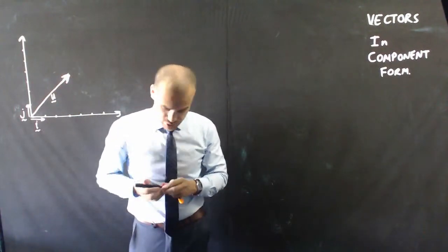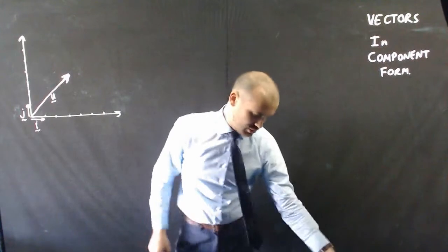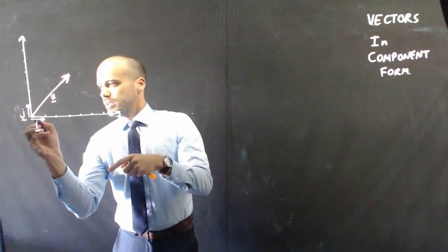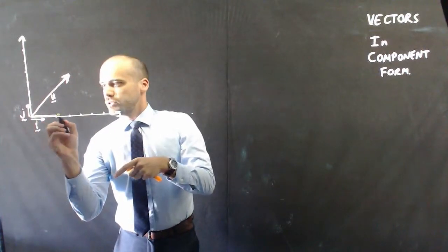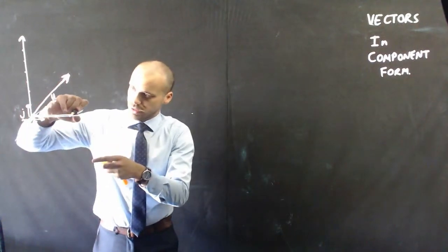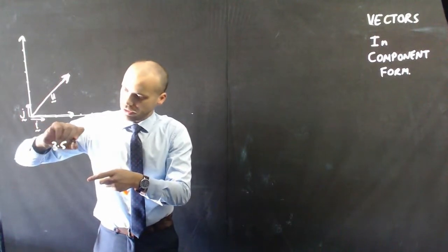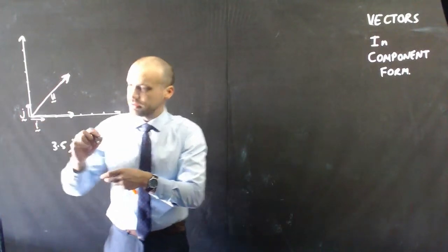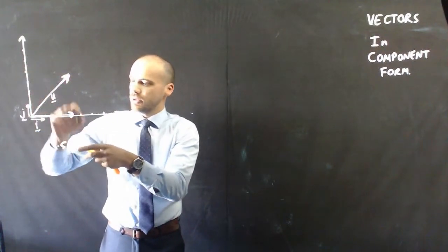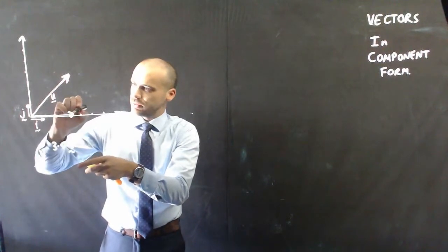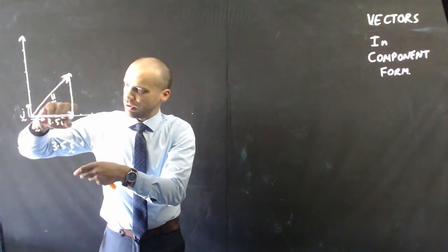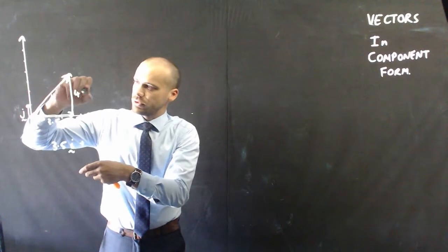So now, what I can do, and this is the cool bit that's going to let us do a bunch of algebra, is I can say that this particular vector is 1, 2, 3, let's say 3 and a half, 3 and a half i's this way. So 3.5i, and then I can add on, 1, 2, 3, let's make it 4, I can add on, so that's 3.5i, and that's 4j.